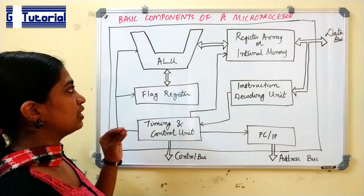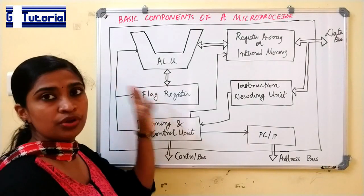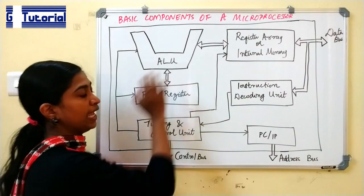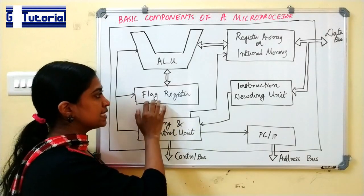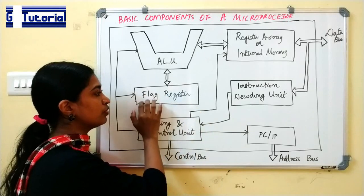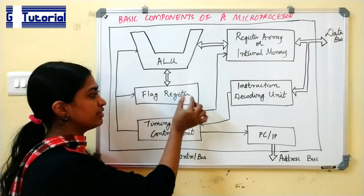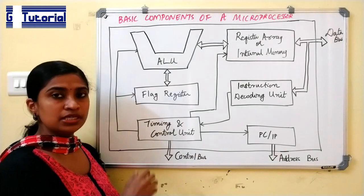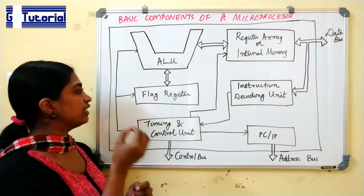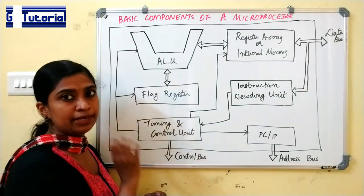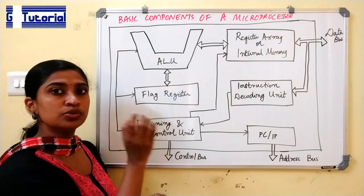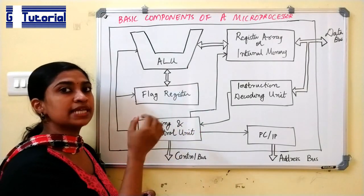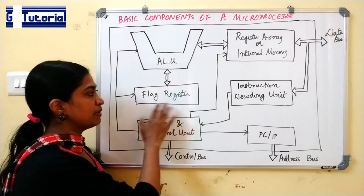The arithmetic and logic unit is the functional unit of a microprocessor. It performs all arithmetic and logic operations. The result of the ALU sets the bits of the flag register. The flag register contains several bits known as status flags. For example, if the result of the ALU is a negative value, it sets the sign bit to 1. If the result is positive, the sign bit is set to 0.